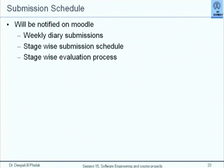The submission schedule will be notified on Moodle with weekly diary submissions, stage-wise submission schedules, and stage-wise evaluation processes. Out of 35 marks, 10 marks are to be awarded by yourselves through peer evaluation, and 25 marks will be awarded based on project reports, quality, quantitative nature of the project, and a viva conducted for the whole group.